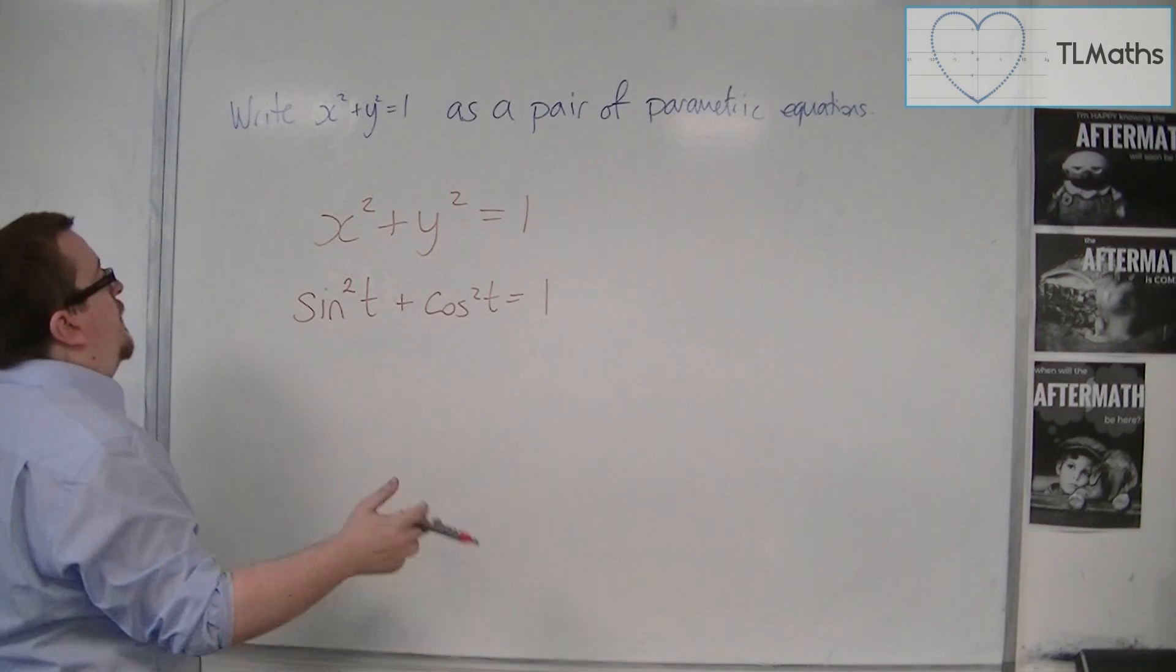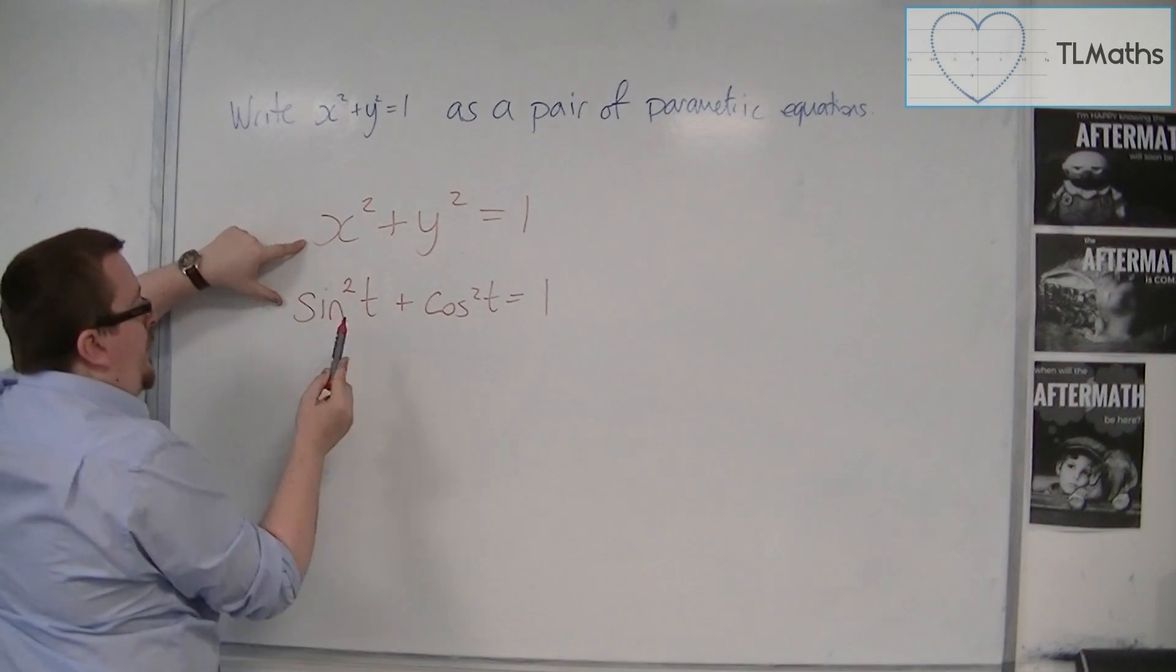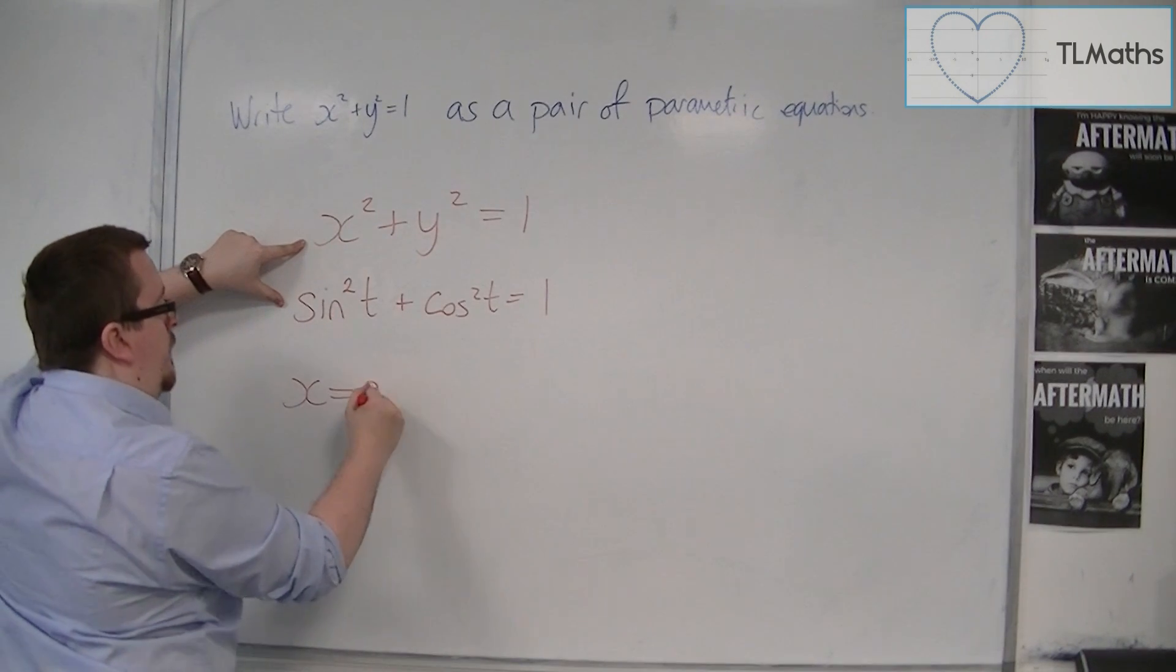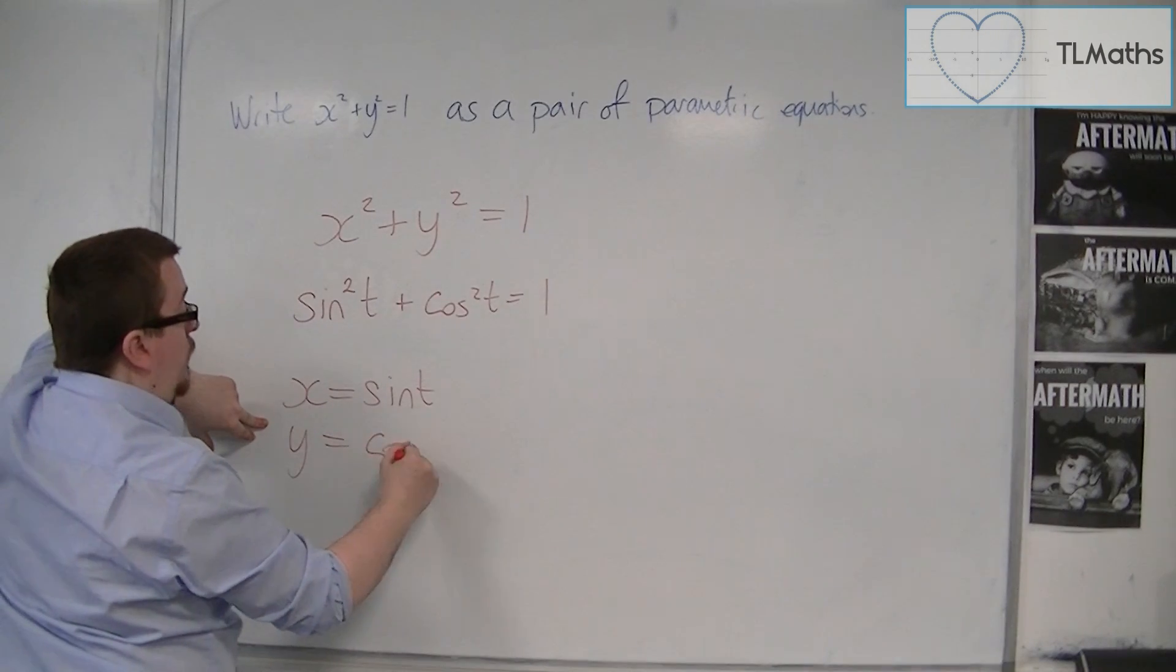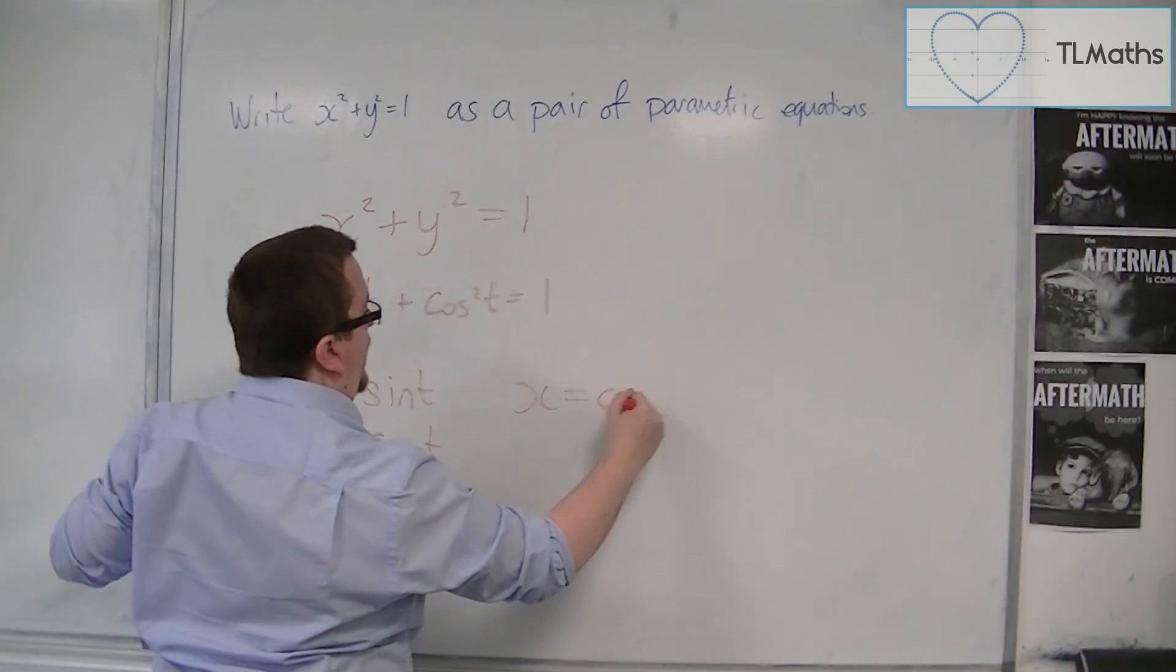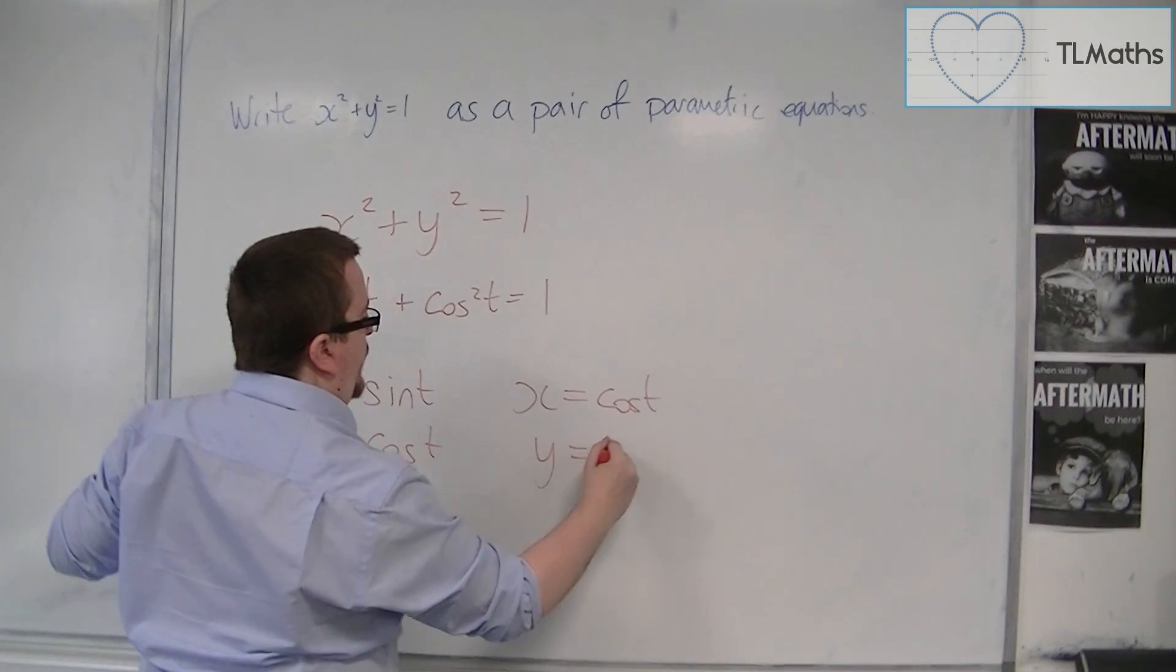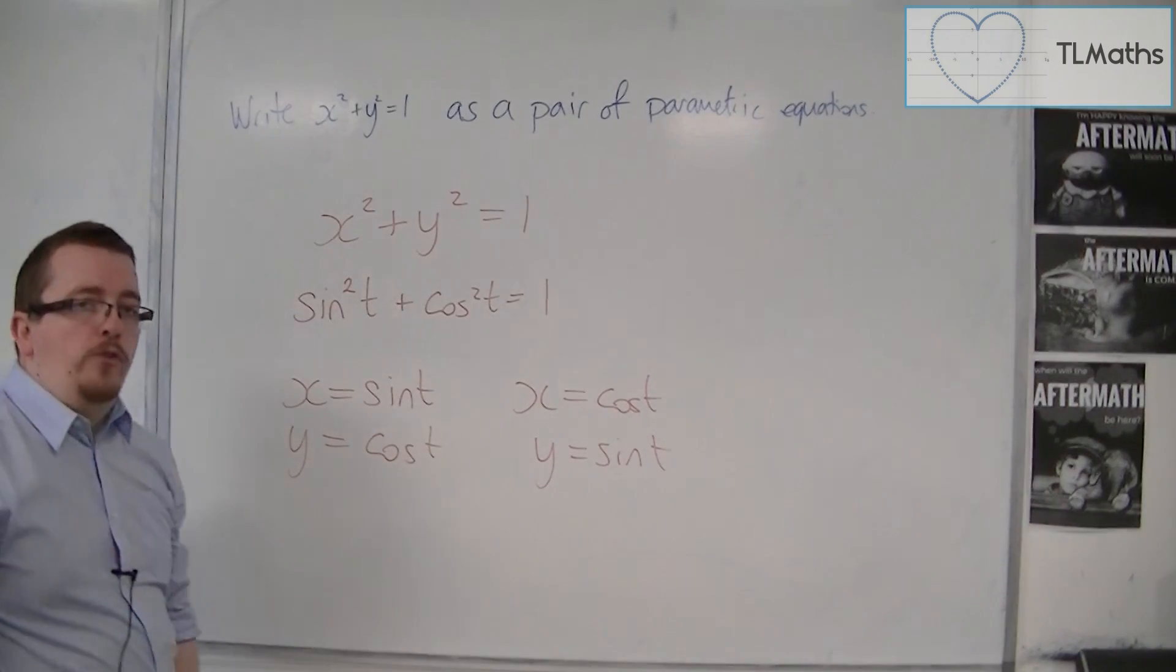And that means that we could write x as sin t and we could write y as cos t. Or vice versa, really. We could have written x as equal to cos t and y as equal to sin t. Doesn't matter. I could have written those around the other way.